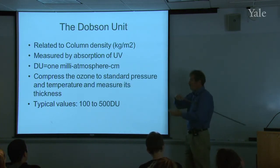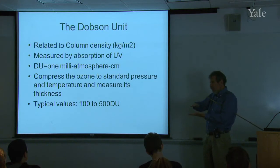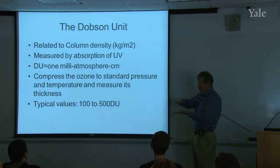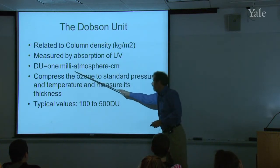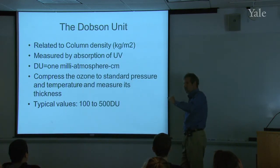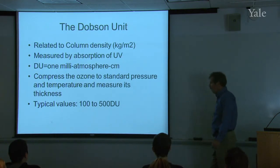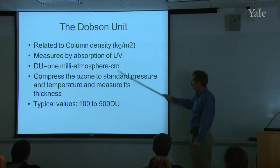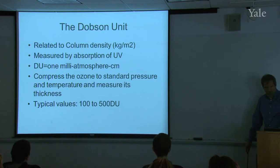Here's how you think about the Dobson unit: you take all the ozone in the column, compress it to standard temperature and pressure — one atmosphere and 0°C — and measure how thick that layer of pure ozone would be in thousandths of a centimeter. That is your Dobson unit value. Typical values for Earth's atmosphere run from 100 to 500 Dobson units, depending on where you are around the world.